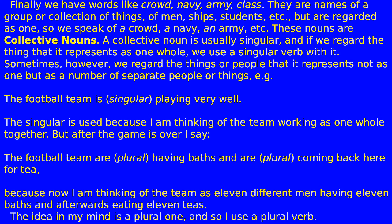Finally, we have words like crowd, Navy, army, class. They are names of a group or collection of things — of men, ships, students, etc. — but are regarded as one. So we speak of a crowd, a Navy, an army, etc. These nouns are collective nouns.